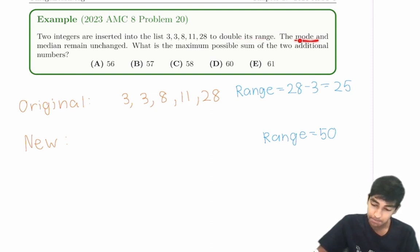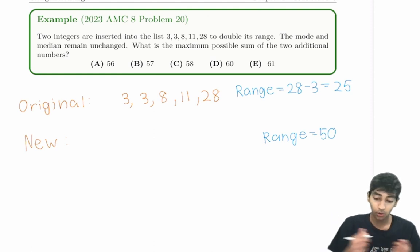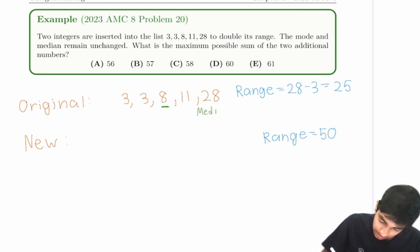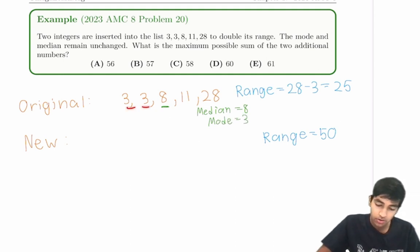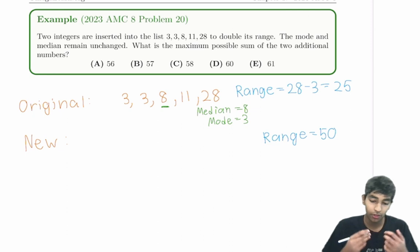Okay, another condition here. Mode and median remain unchanged. So what are the mode and median of this original sequence? Median is the middle term when written in increasing order. So 8, that is going to be the median. Mode is 3 because there's two 3s. So of the original sequence, median 8, mode 3. The new sequence must also have median 8 and mode 3.